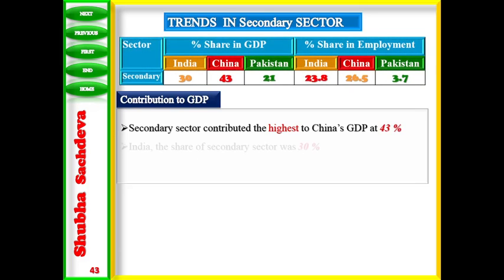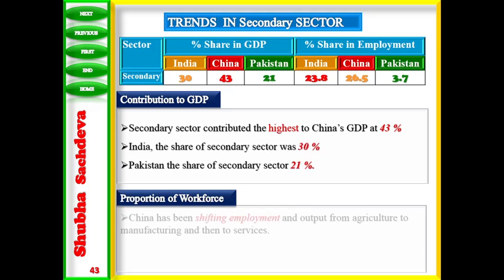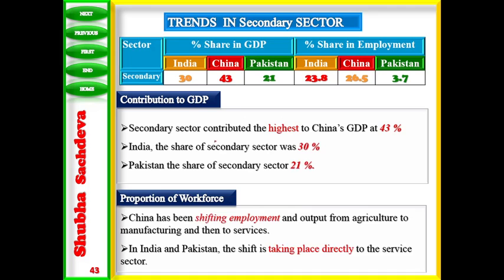When we talk about the secondary sector and its contribution to GDP: in China, the secondary sector contributes the most at 43 percent, while the tertiary sector contributes 48 percent. But compared to the population working in the secondary sector, China's output per worker is highest. India's share is 30 percent and Pakistan's share is 21 percent. The most important secondary sector workforce is in China, followed by Pakistan.